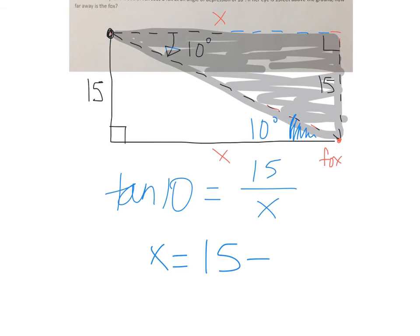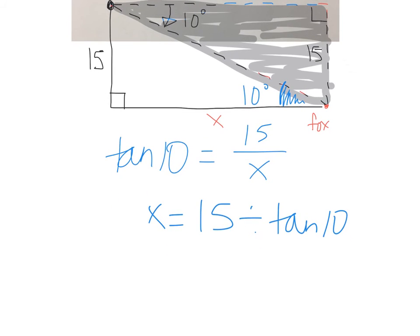So if we did 15 divided by the tangent of 10, we would find out that Alex is 85.1 feet away from that fox.